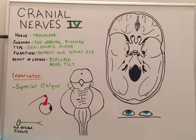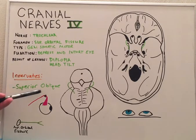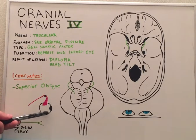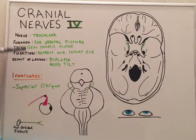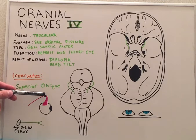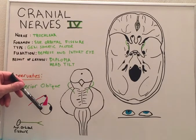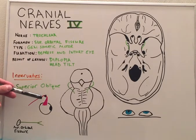The trochlear nerve innervates a single muscle called the superior oblique muscle. As seen in this diagram, the superior oblique muscle wraps around a structure called the trochlea — which gives the trochlear nerve its name — and attaches to the eyeball in an oblique fashion.